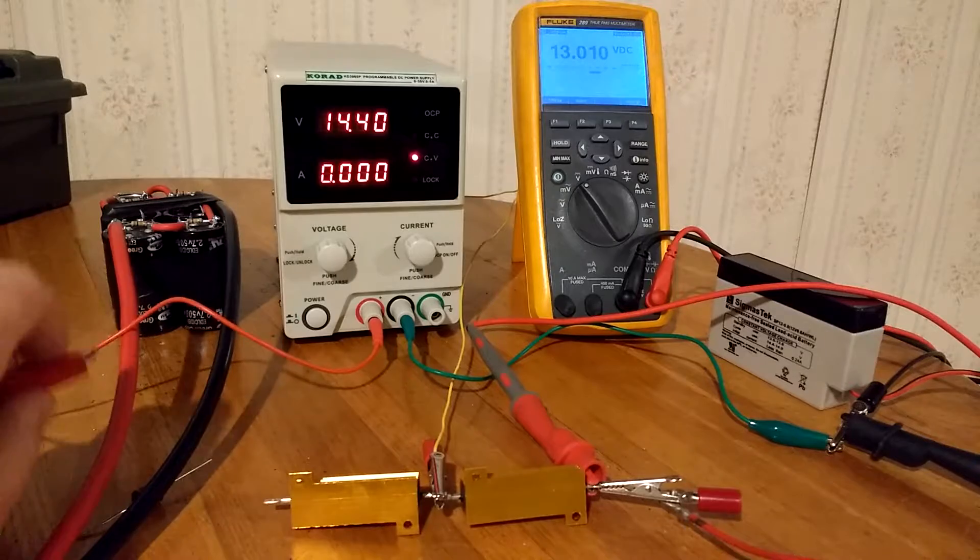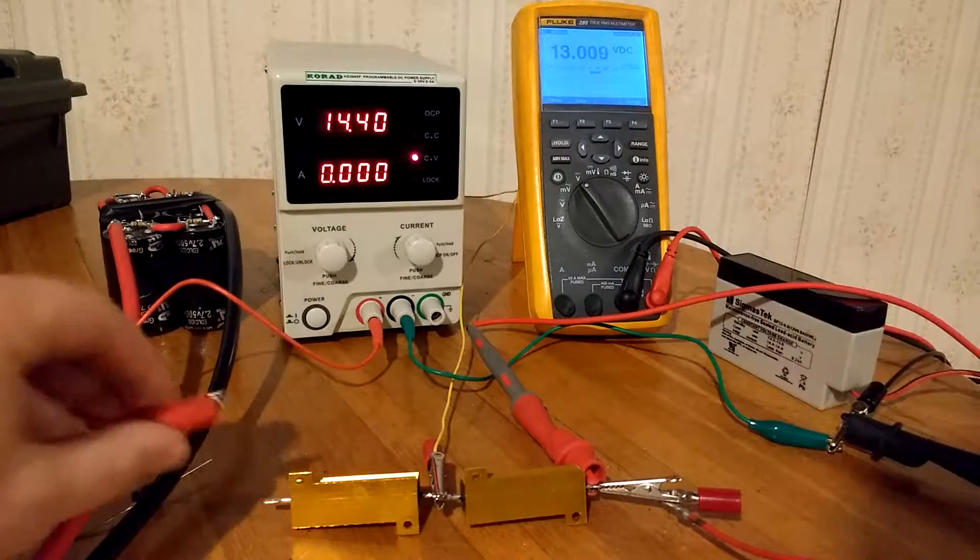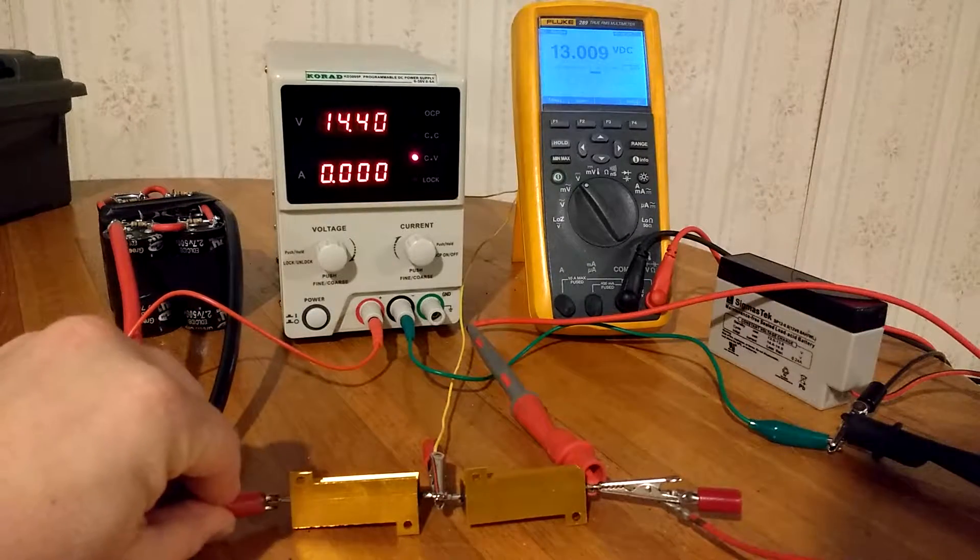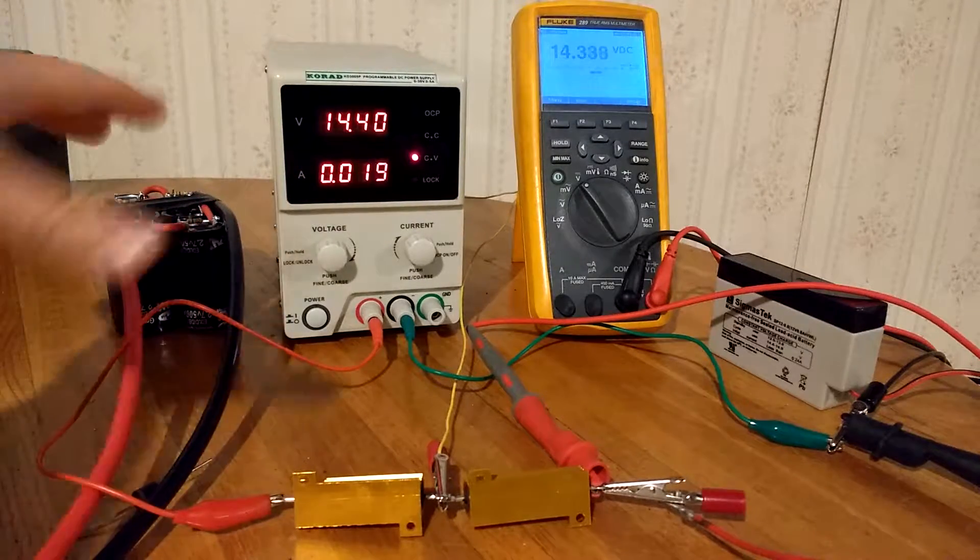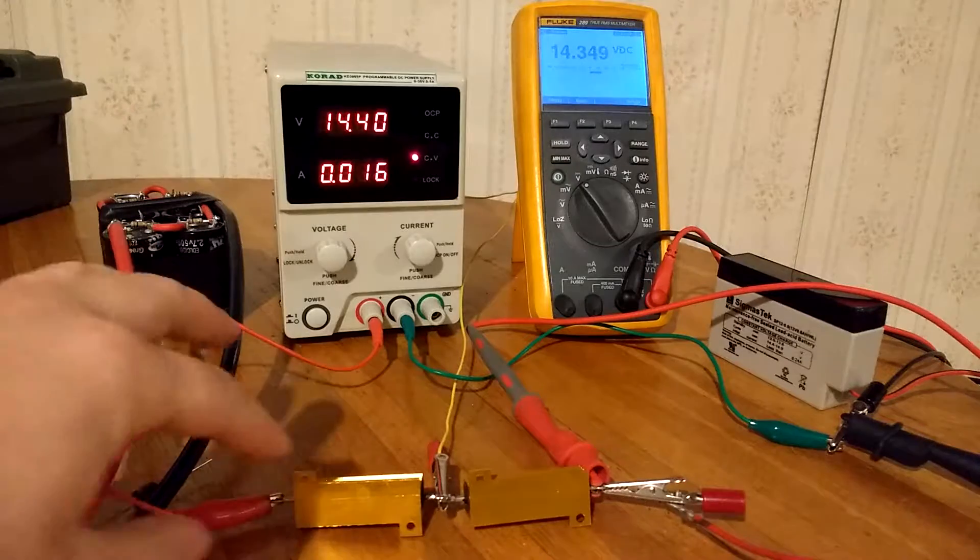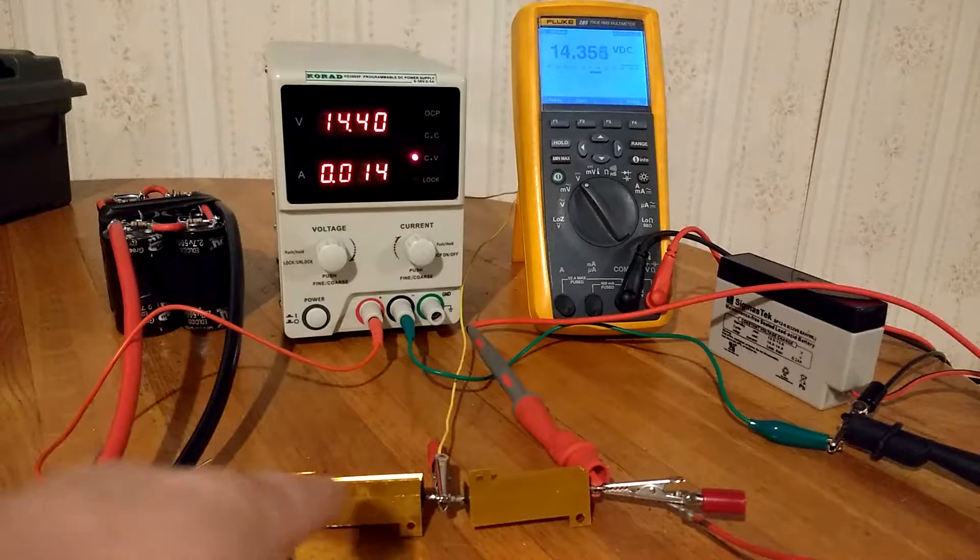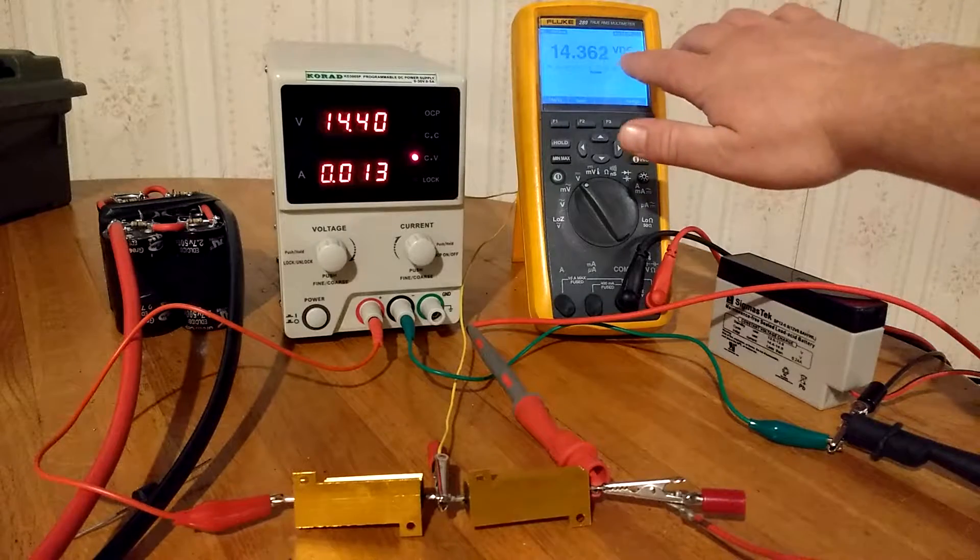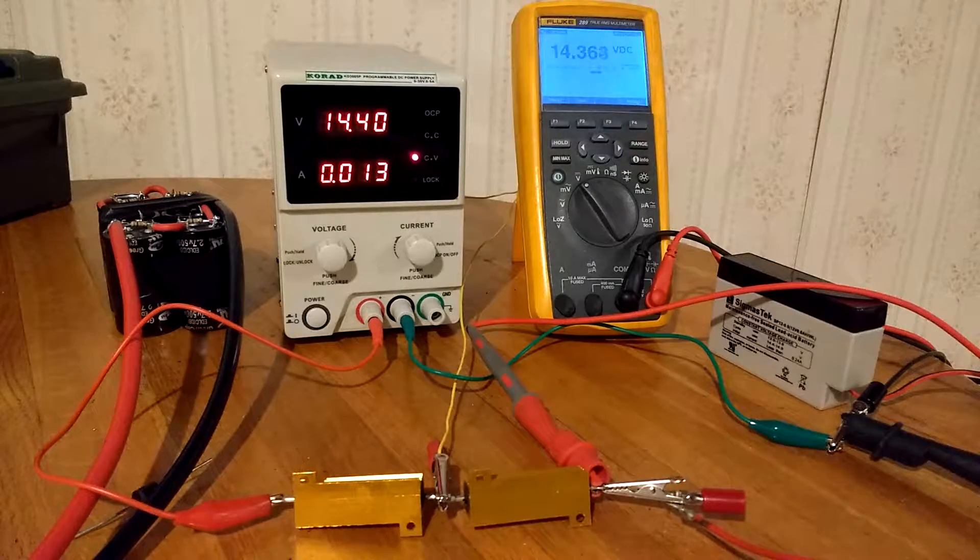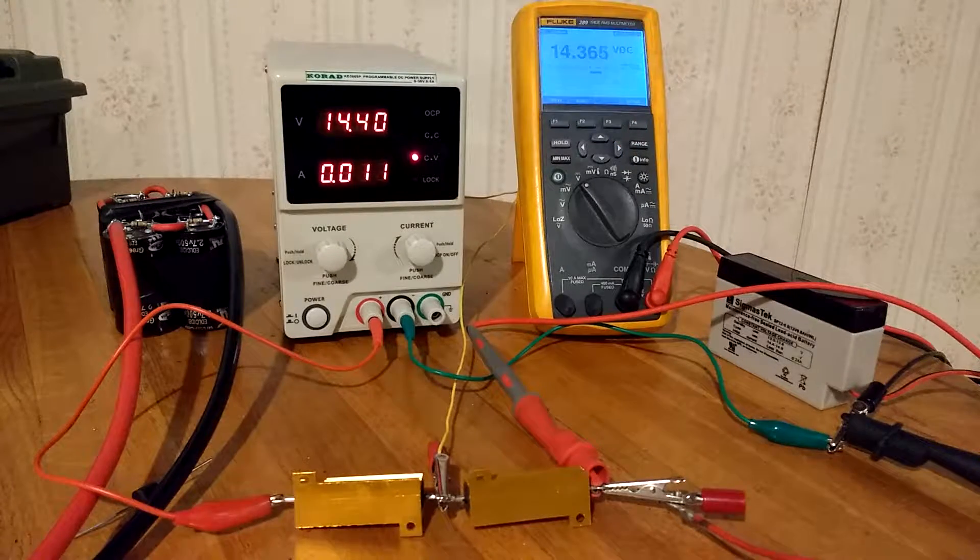So when I go and start the vehicle and this battery is charged right now, I have 14.4 volts coming out of the alternator. It would go into the capacitors and this is in parallel, so I have my 3 ohm resistor and you can see that with the charged battery it's drawing a small enough amount of current that I'm very close to my 14.4 volts.